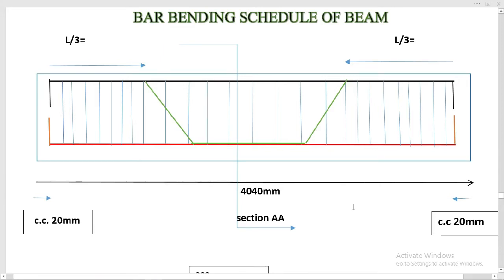Bismillahirrahmanirrahim, welcome to the Quantity Survey course. In this lecture we will discuss the bar bending schedule of a beam in very detail. This is a very important lecture. Let's start. First, I want to show you the beam elevation view. The total length including concrete covers is 4040 millimeters — 20 millimeters cover from each side, and 20 millimeters from top and bottom.